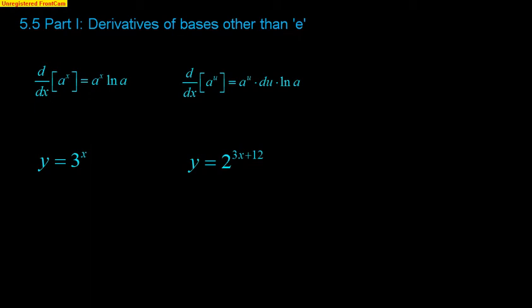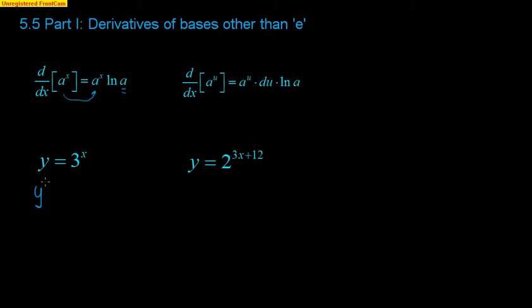I have the first two derivative rules at the top here. If we have the derivative of a to the x, then the derivative winds up being the exact same thing times the natural log of the base. Here is our first example, the most basic one. We have y equals 3 to the x, so y prime is going to be 3 to the x times the natural log of 3. And we're done.